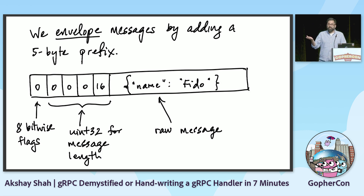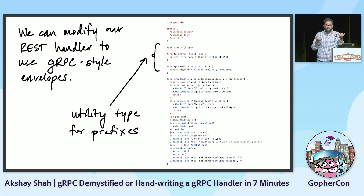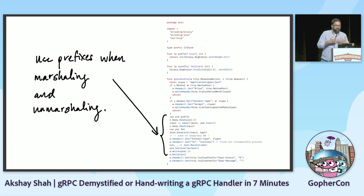Let's integrate this into our REST handler. We write a little utility type to represent this prefix — it's just a five-byte array with some helper methods that use encoding/binary to manage encoding integers to bytes. This is example code, so the error handling is bad; I don't handle overflows, underflows, or any of the other things you would want, but it gets the point across. Next, we need to change our content type. We now have these binary prefix blocks intermingled with our JSON, so our content type changes to application/grpc+json. Then we actually use the prefixes when we're marshaling and unmarshaling. This is a little bit tedious, but it's just managing a handful of extra byte slices.